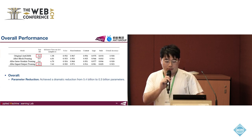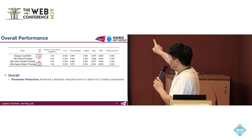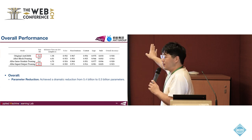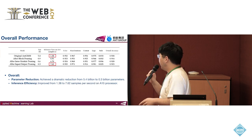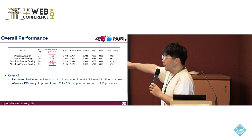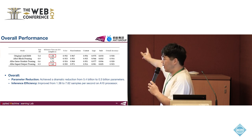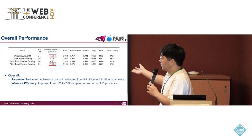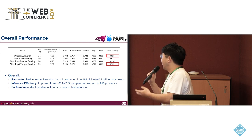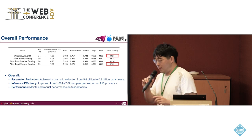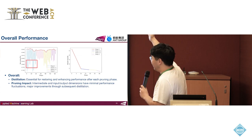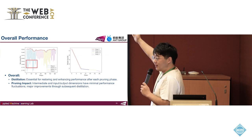Here is our overall performance. We compressed our model from 5.4 billion parameters down to 0.3 billion — a dramatic reduction. Inference efficiency is also greatly increased. Using the ATEN GPU processor for inference testing, the samples processed per second increased by approximately seven times. Yet the performance does not drop a lot; it maintains robust performance. You can also see the detailed step-by-step view showing how performance drops after each pruning step and recovers after distillation.